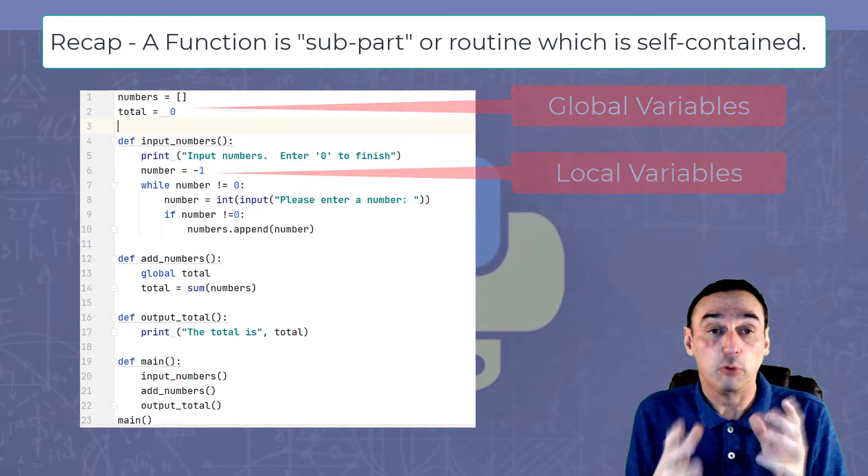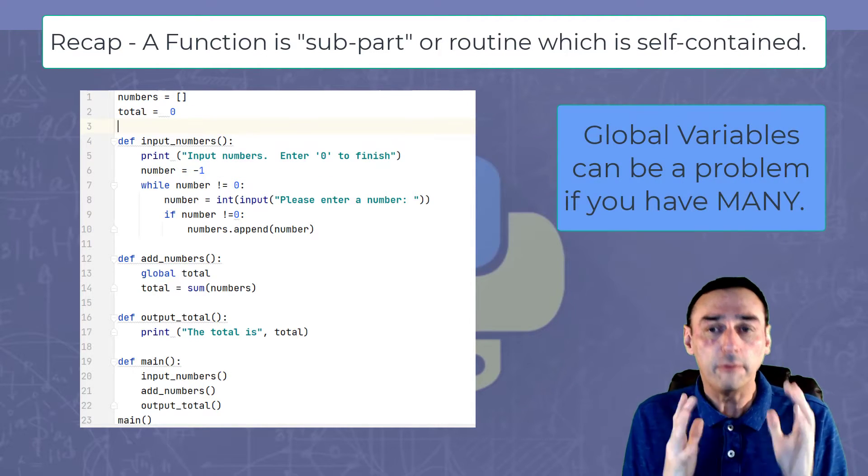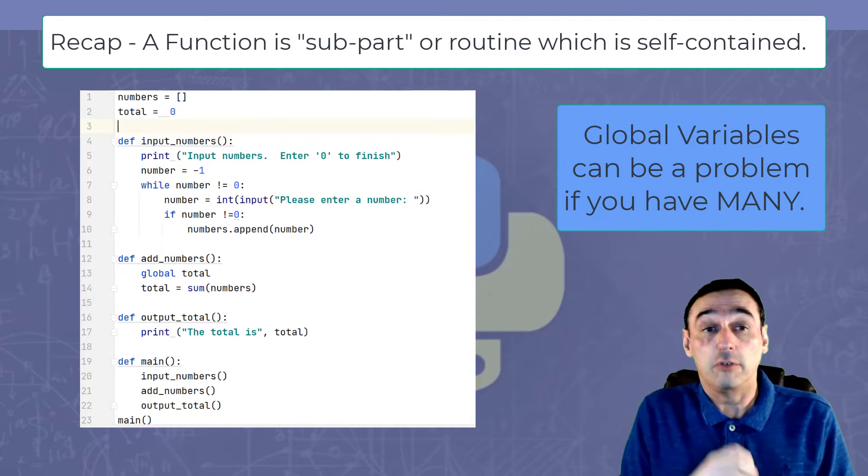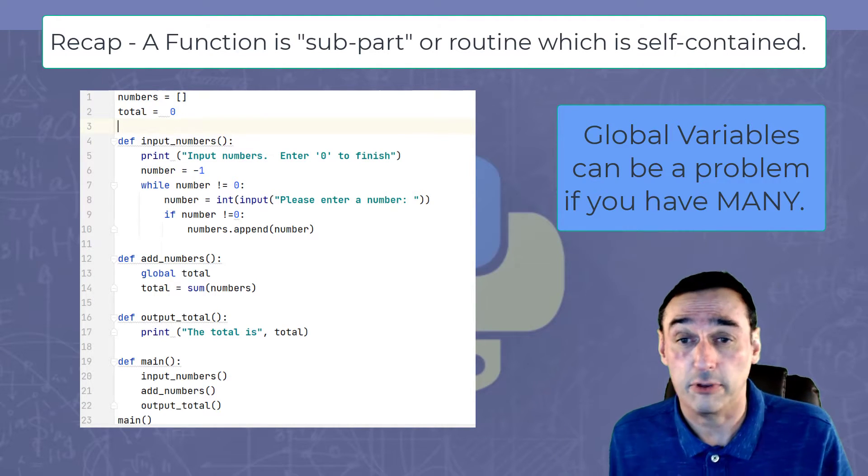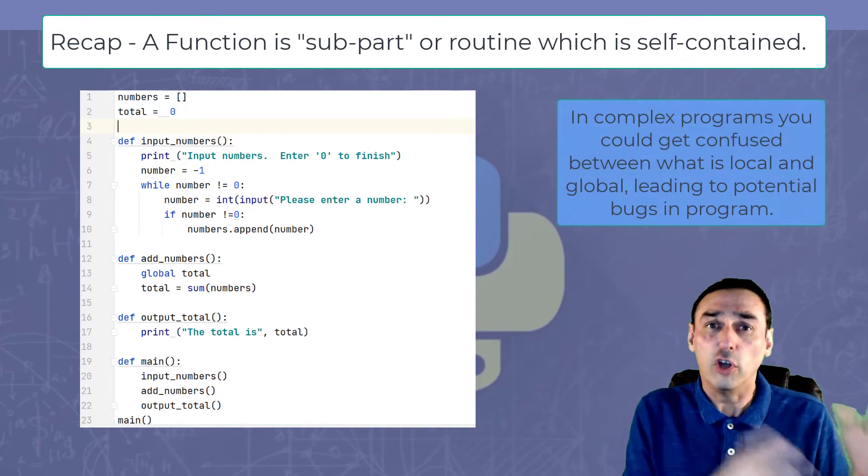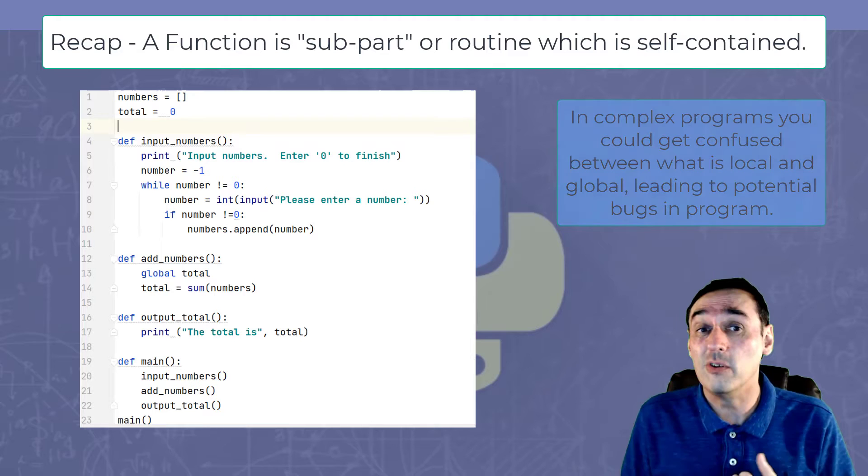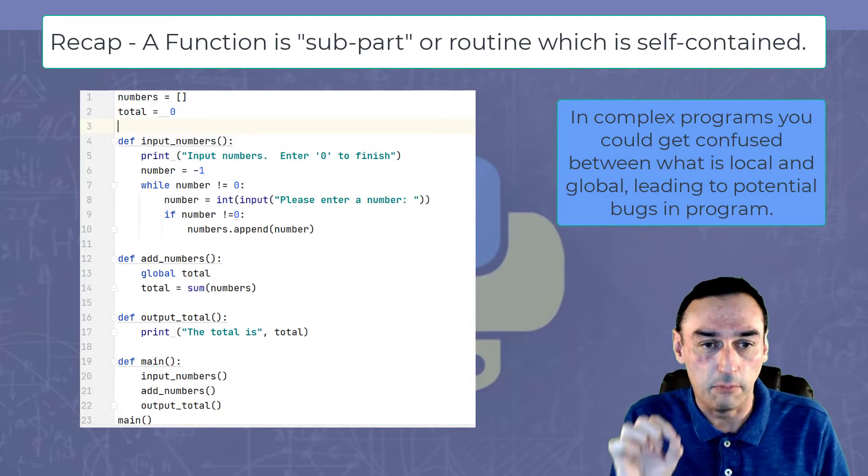Global variables can be a problem if you have many of them. For example, in a very complex program, you could get confused between what is local and what is global, leading to potential bugs in your program.